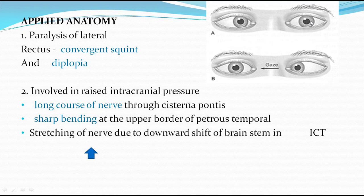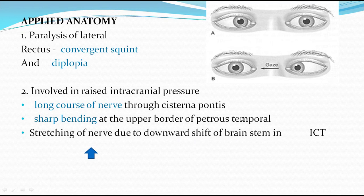Because one eye is seeing a different visual field than the other, the person will also experience double vision, called diplopia - another clinical symptom of sixth cranial nerve palsy. Any involvement of the brain, meninges, or CSF causing raised intracranial pressure can stretch the abducent nerve, due to its long intracranial course through the cisterna pontis and sharp bending at the upper border of the petrous part of the temporal bone.